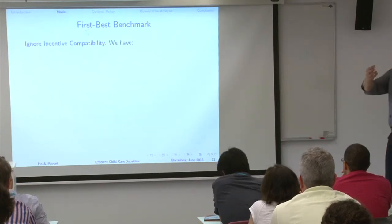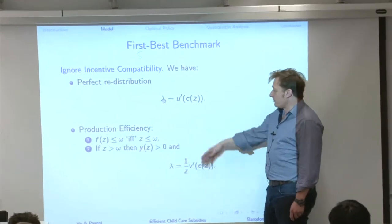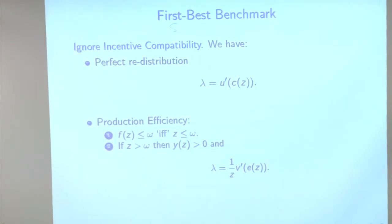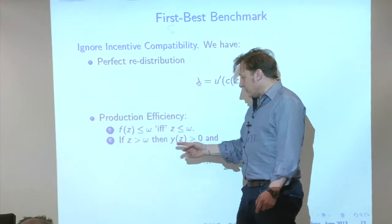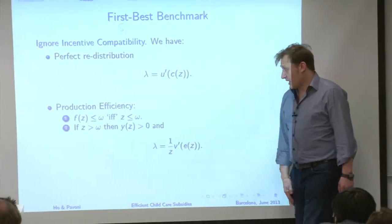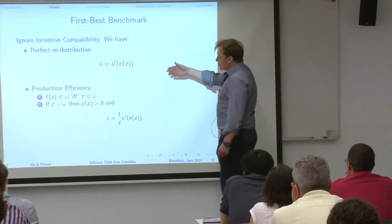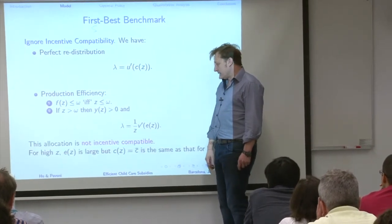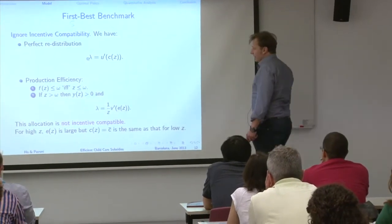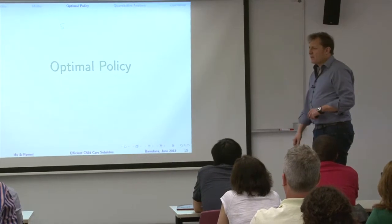If you don't have incentive compatibility, perfect redistribution is feasible. You have production efficiency — the only reason for informal childcare activity is because your productivity is below the cost of formal childcare; otherwise you just work and use formal childcare. The efficient allocation is not incentive compatible because giving the same consumption to everybody and asking more productive types to work more means they want to deviate. Hence we study the optimal policy.